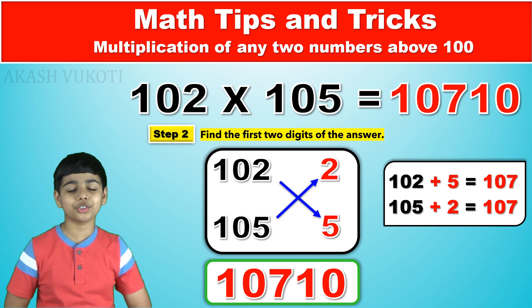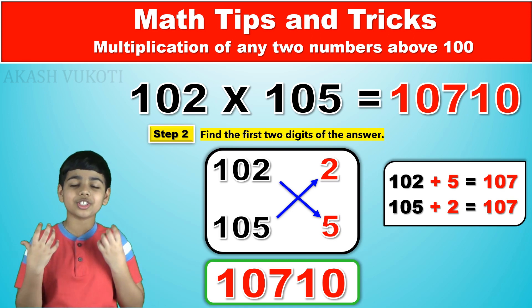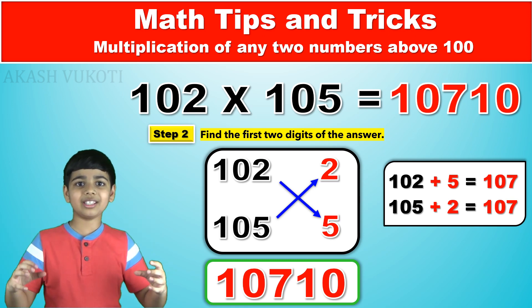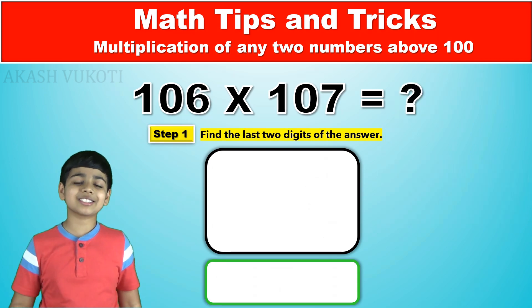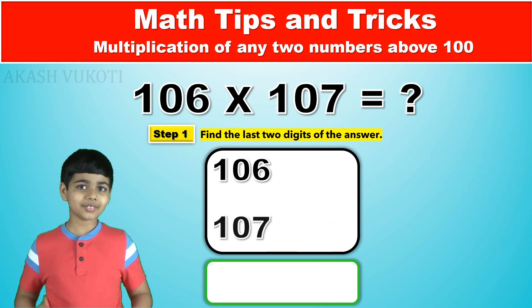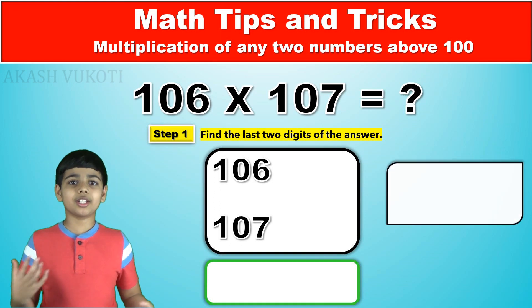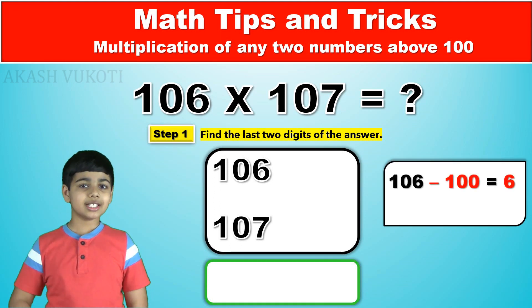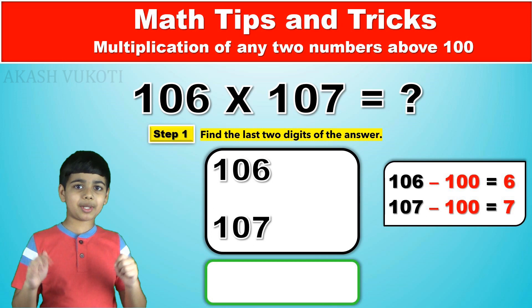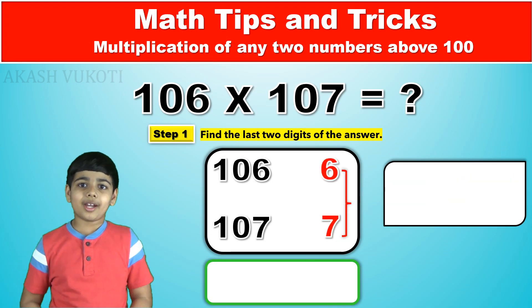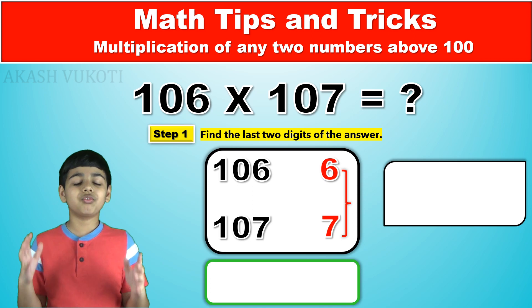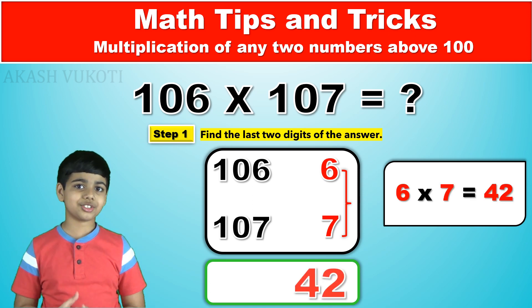It's a wonderful trick. And now, just to get a bigger grip on it, let's try to solve another one. Say, 106 times 107. We take the difference between the numbers and 100, getting 6 and 7 respectively. We write these down. Next, we multiply both numbers together, getting 42, which are our last two digits.